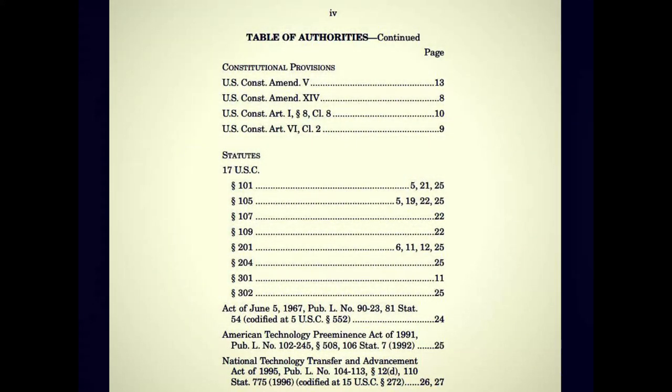There's a Constitutional Provision section of which only two amendments are actually noted here — number 5 and number 14. Number 14 doesn't have any standing because it is contradicted by previous articles and amendments, but it's cited here anyway. And the U.S. Constitution Article 1, subsection 8, clause 8, and Article 6, clause 2, and then there are USC statutes that are ironically quoted in this document, and we will see why that's a little bit strange later.